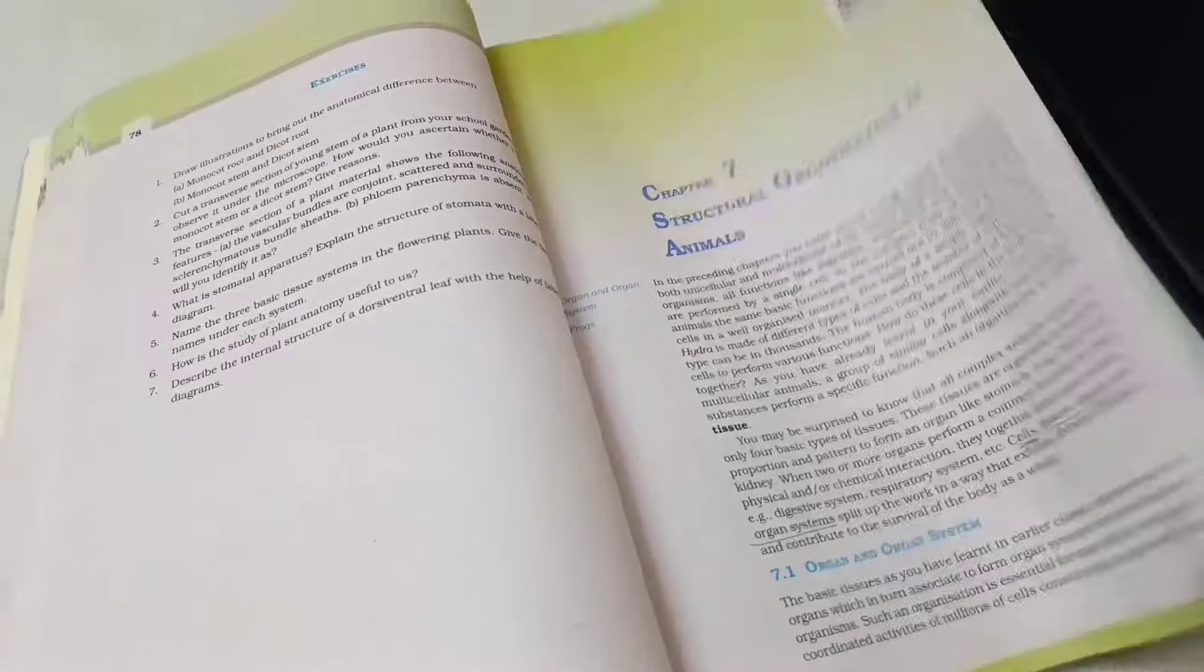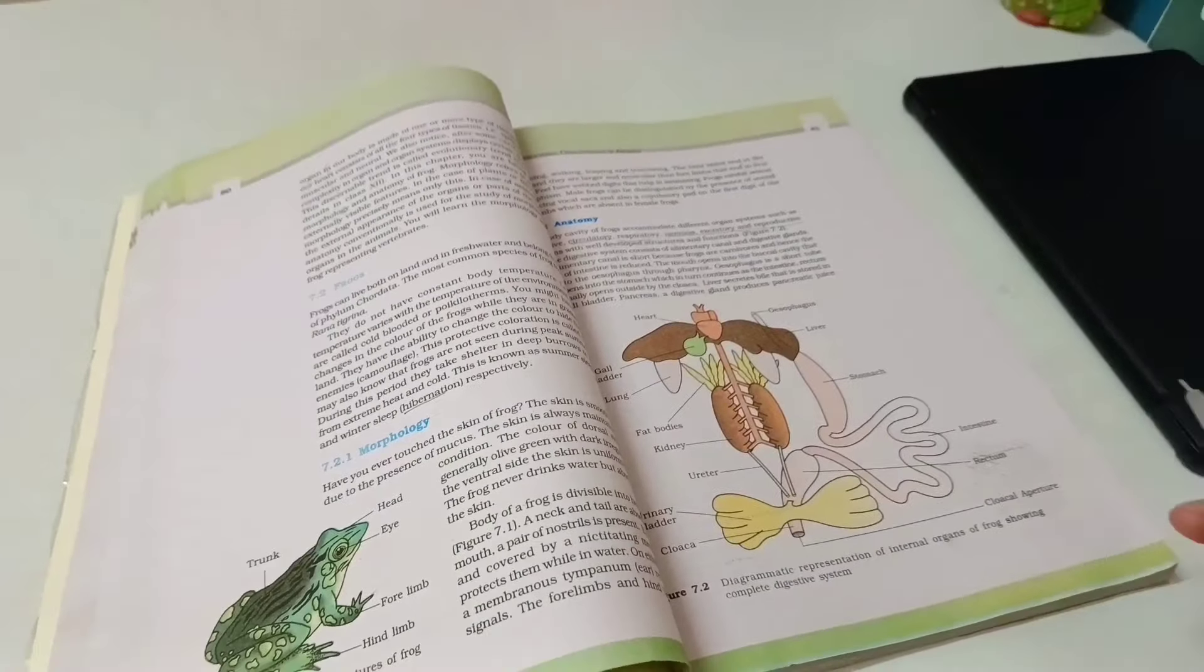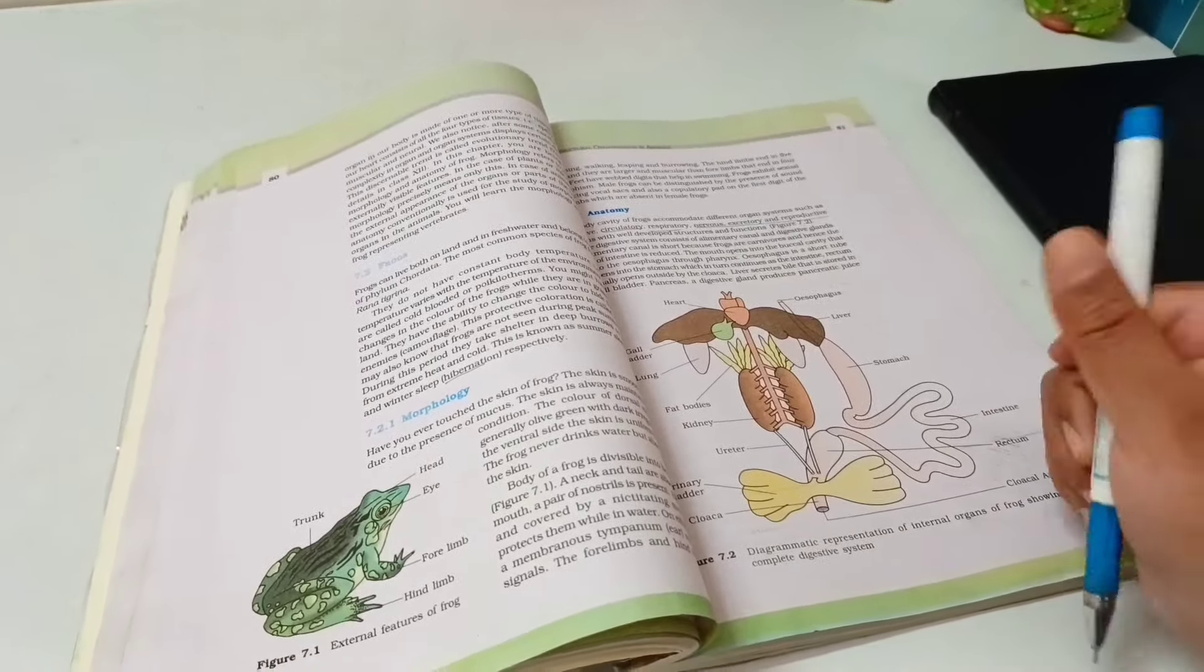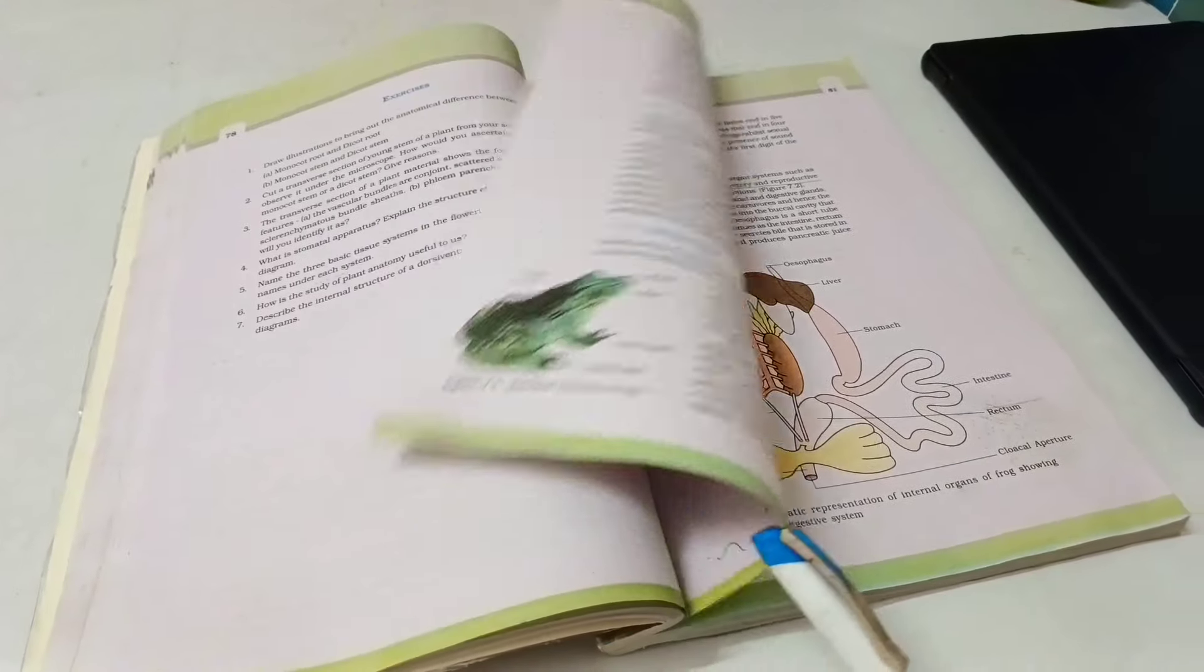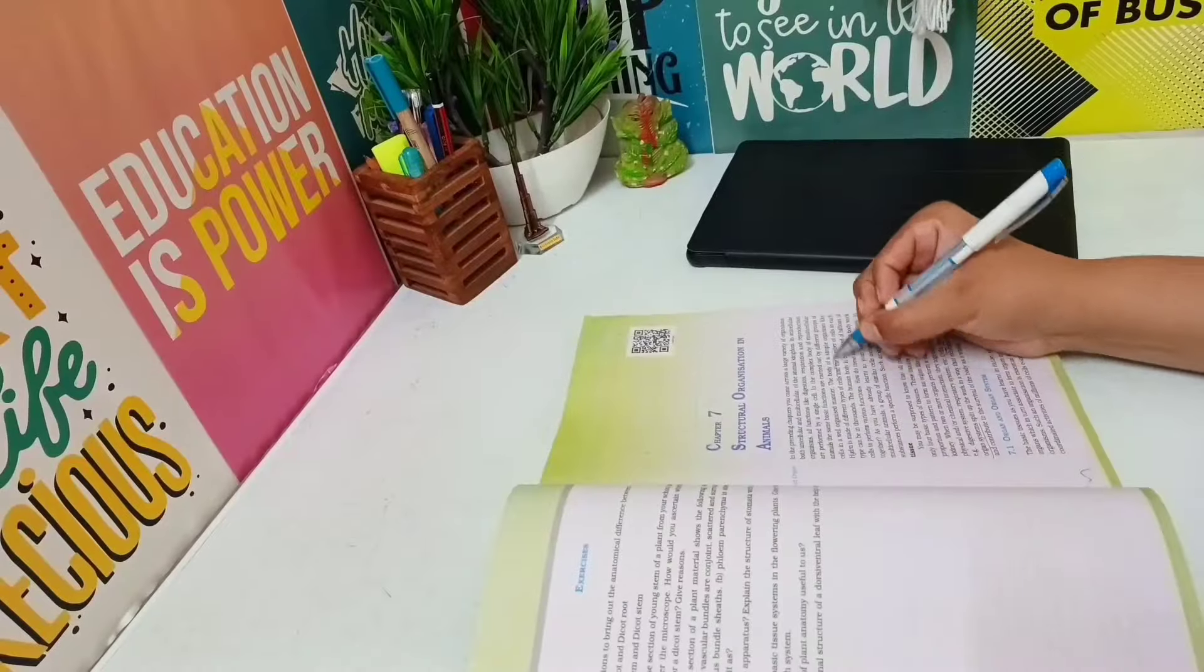So my anatomy chapter is completed. Now I have to do the Structural Organization and Animal chapter. It is a small chapter, there is no more detail. So I will quickly complete it and then if I have time, I will do another chapter.